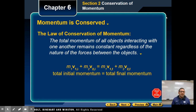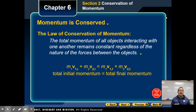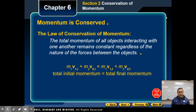The law of conservation of momentum states that the total momentum of all objects interacting with one another remains constant regardless of the nature of the forces between the objects, which leads us to the following equation: m1v1i plus m2v2i — those are the initial momentums of object one and object two — set equal to m1v1f plus m2v2f, the final momentums of both objects. Since they are set equal to each other, this is where we get the law of conservation of momentum.